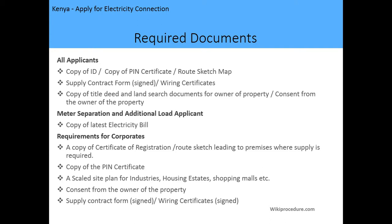The required documents for all applicants are: a copy of your ID, PIN certificate, a route sketch map to the location of the premises which requires electricity connection, a supply contract form, a wiring certificate, a copy of the title deed, a land search document for the owner of the property, and a consent from the owner of the property. For applicants requesting meter separation, additional load, or voltage change, a copy of the latest electricity bill is also required.